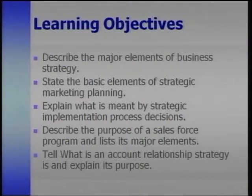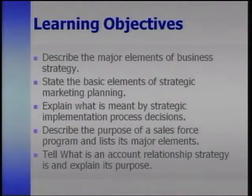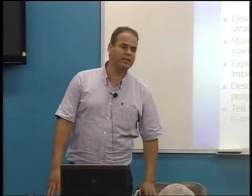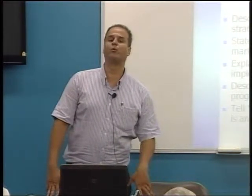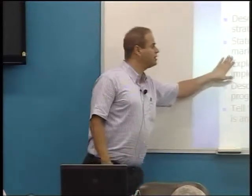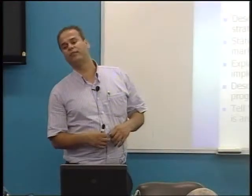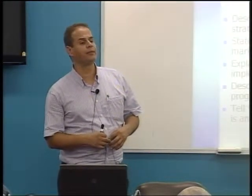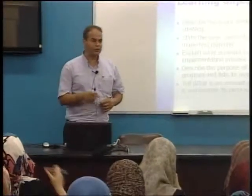Let's talk about the learning objectives we will cover by the end of this chapter. Number one, we are going to describe the major elements of business strategy. Before describing the major elements, we will define what business strategy means, why it is important, and what elements compose it. We will also talk about the basic elements of marketing planning. Remember, business strategy and marketing strategy are interrelated concepts.